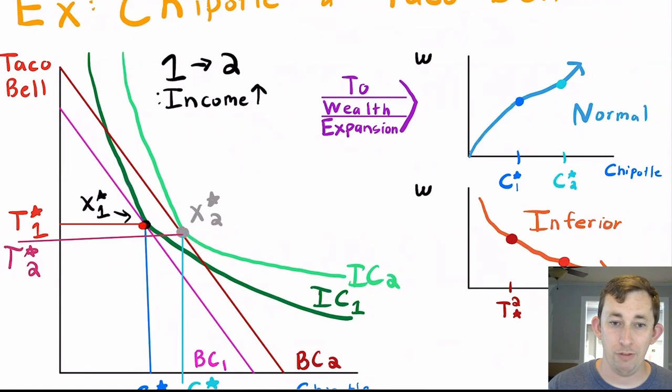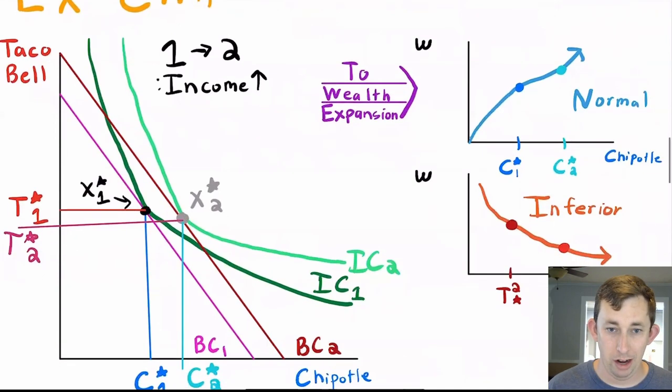Notice that when I go from subscript one to subscript two, from this black bundle to this gray bundle, the amount of Taco Bell or T star has gone down, the amount of Chipotle or C star has gone up. So we can use this to again,